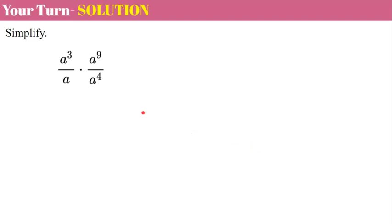Welcome back. So once again there are several ways that you could approach this. I'm first going to approach it by simplifying each quotient. So I have a cubed divided by a, and remember there's an invisible one here, so that's a cubed all over a to the first. So three minus one gives me a squared.